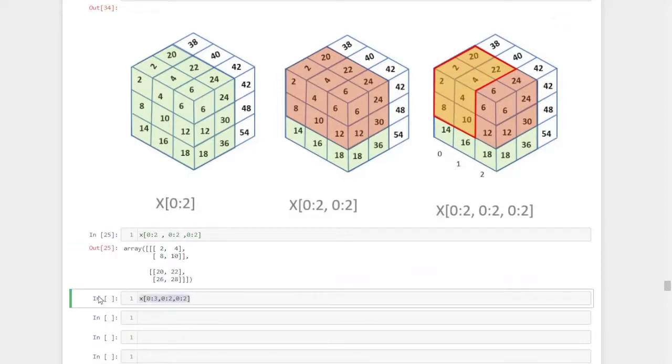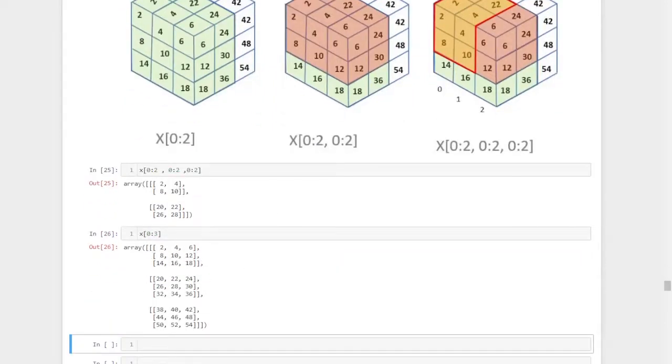Suppose if I want to trim out certain other elements, instead of this, I need 2, 4, 6 or I need 2, 20 and 38. All these layers, all these elements I need, but up to here. Then we can give x of 0 to 3. So I got all the 3 layers, all the elements from all the 3 layers.